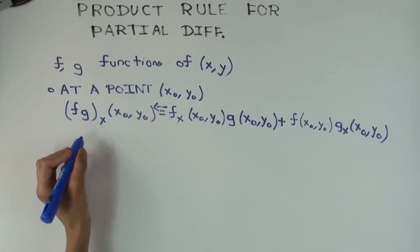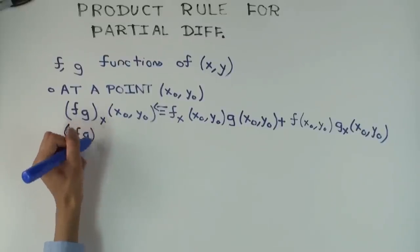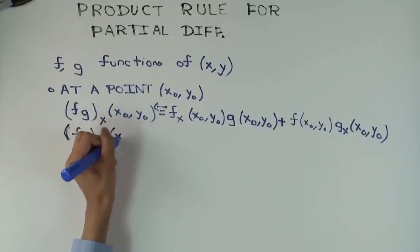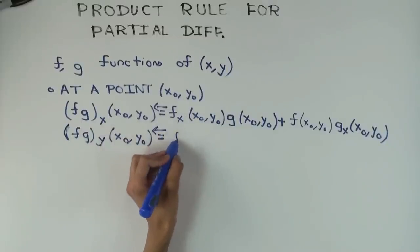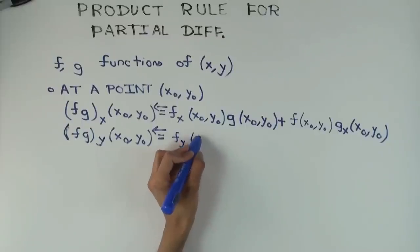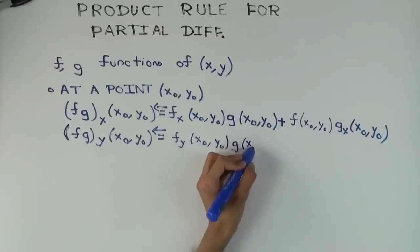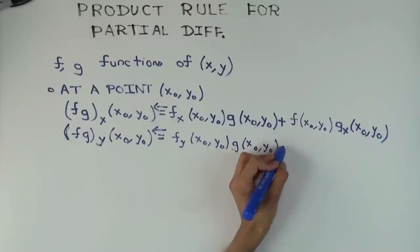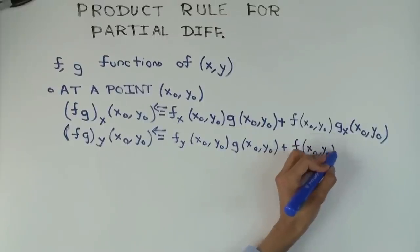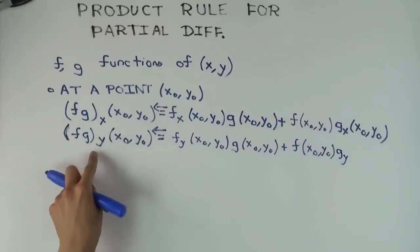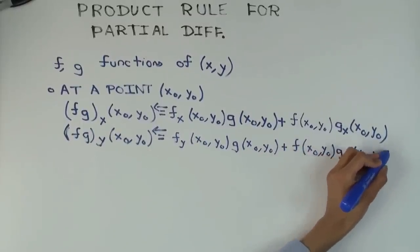There's one more, right? The partial derivative with respect to y. How is that going to be different from the x case? All sub x becomes sub y. Sure. That's all. Nothing else changed. So the only change is that instead of subscript x, you have subscript y.